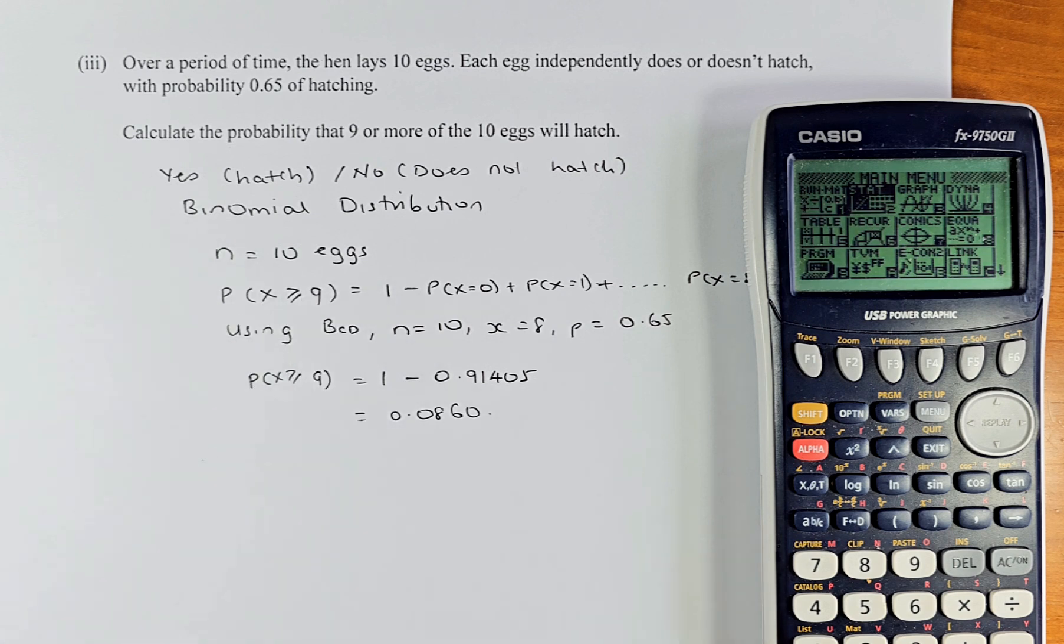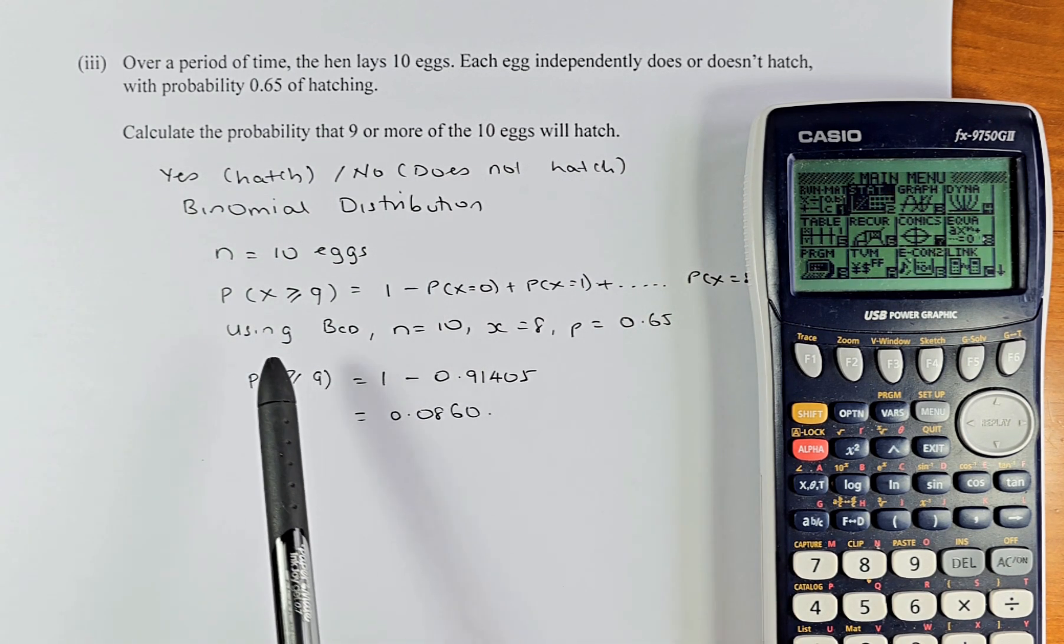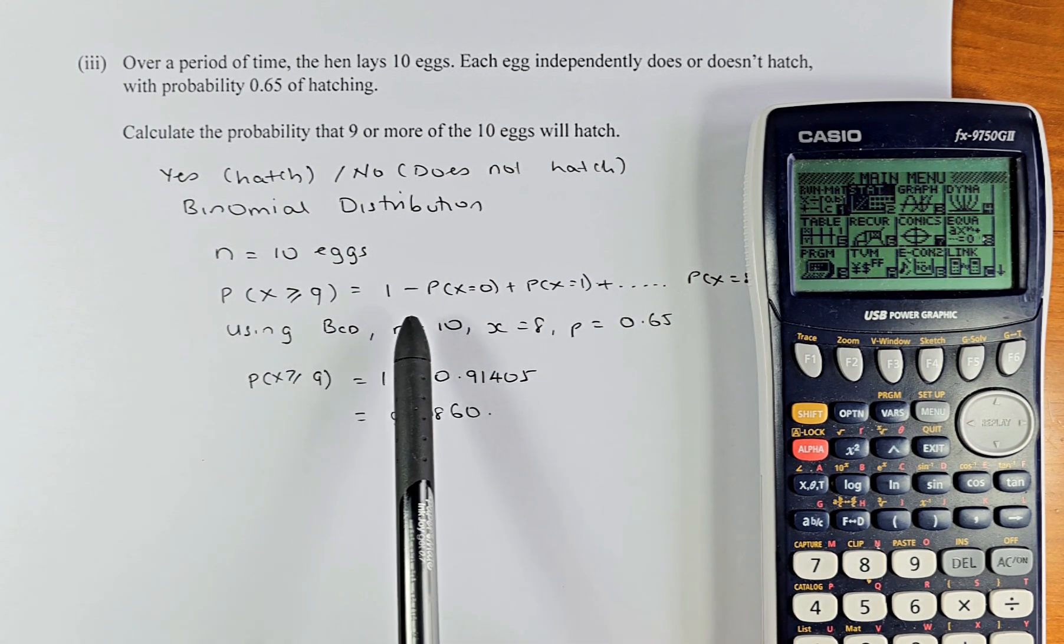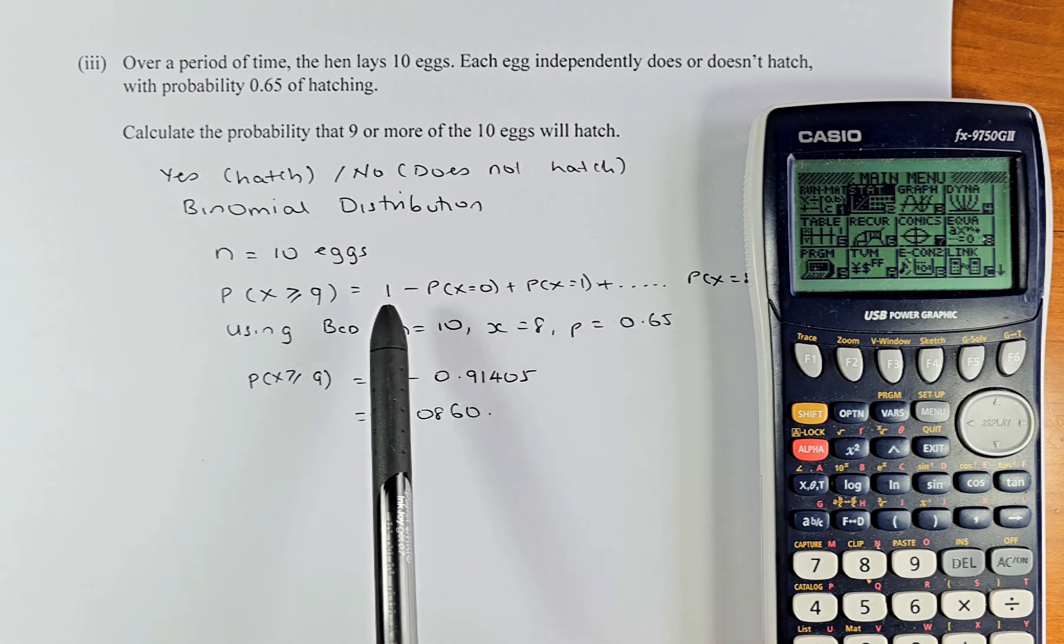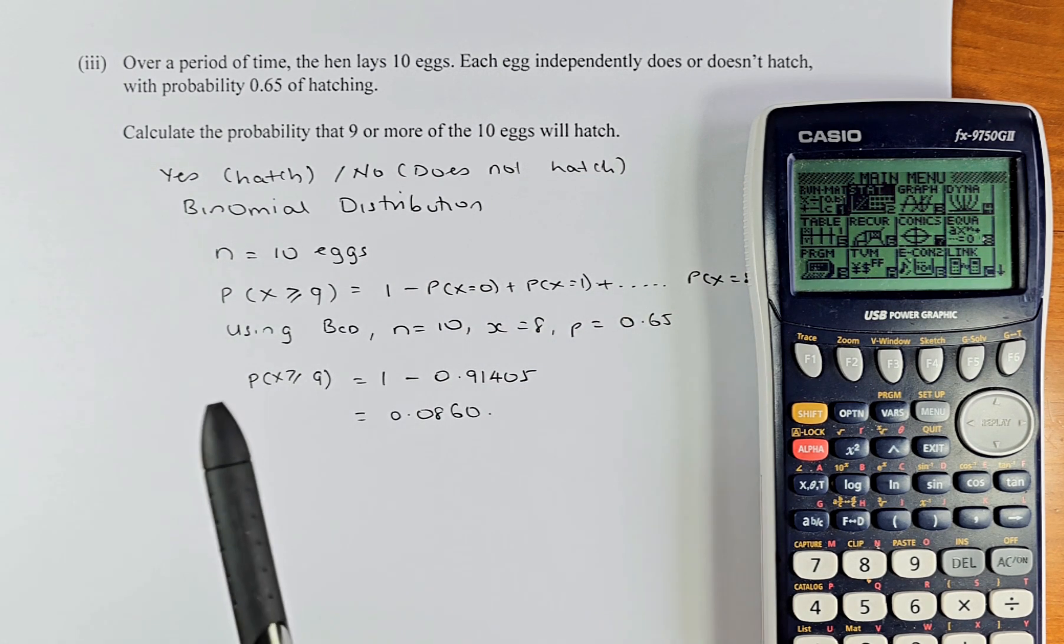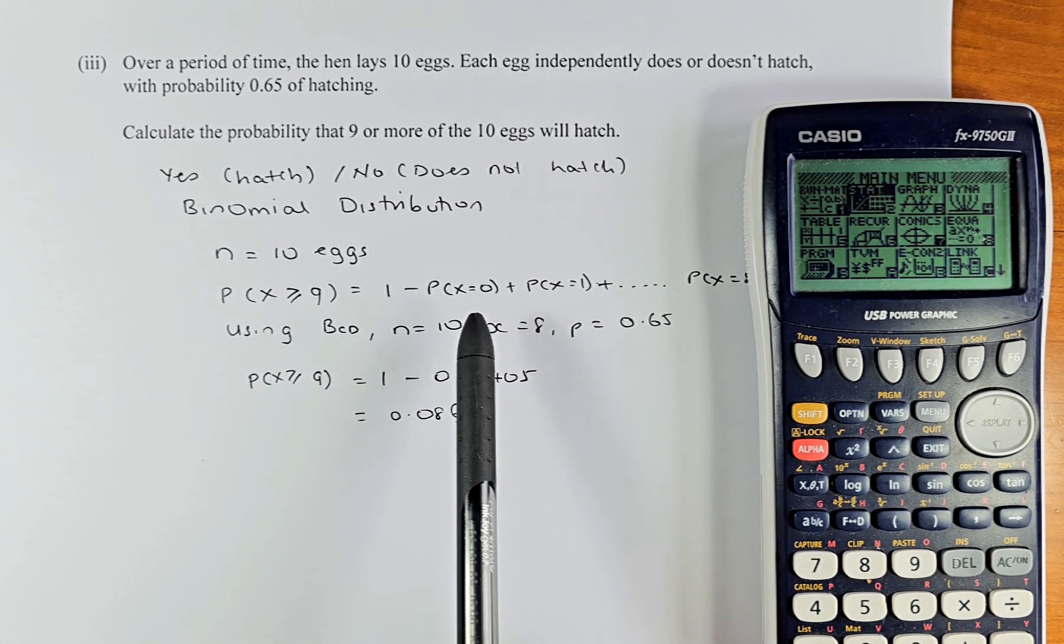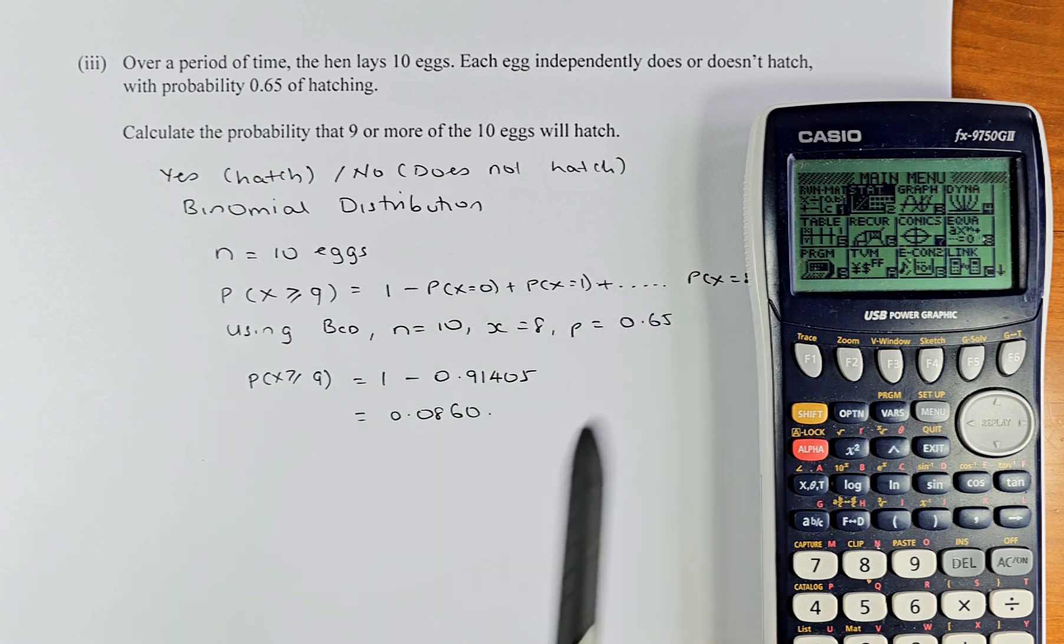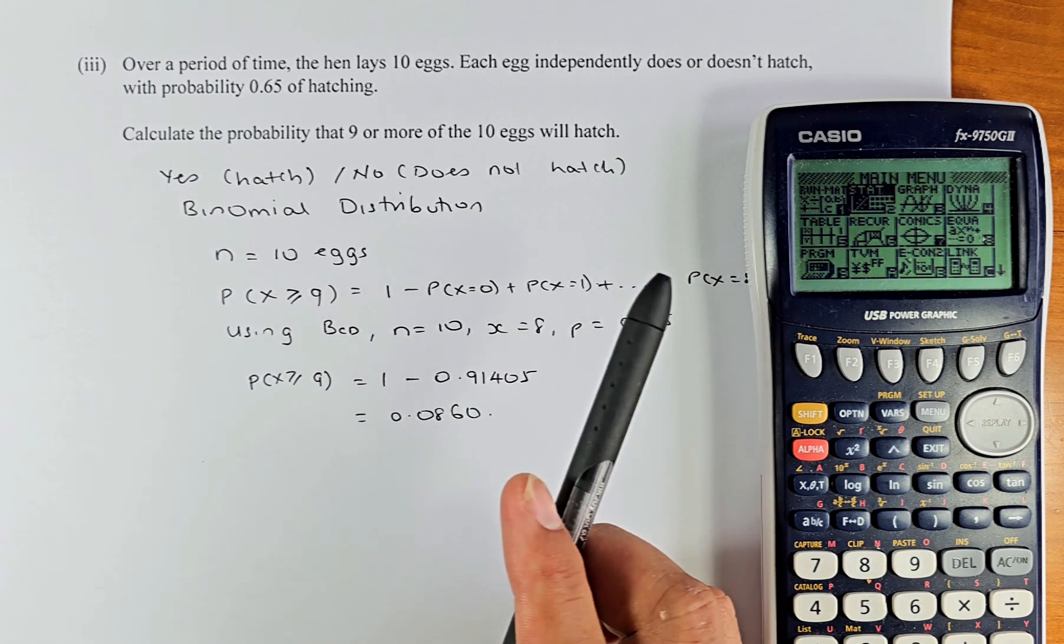So N is 10, there are 10 eggs. There are two ways: one, you need to calculate 9 or 10, or the other way you can take 1 minus probability of 0 to 8. You can calculate probability of x equal to 9 plus x equal to 10, or you can do the opposite way. You take 1 minus probability of x from 0, 1 all the way to 8. I would prefer to do the second method. So now we are going to put in a calculator and calculate the probability of x between 0 to 8.